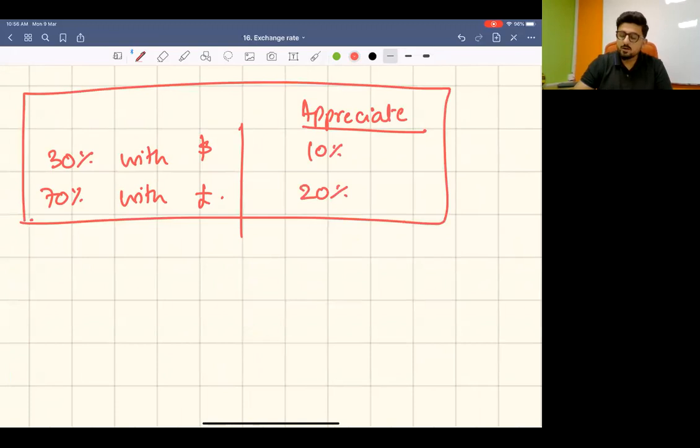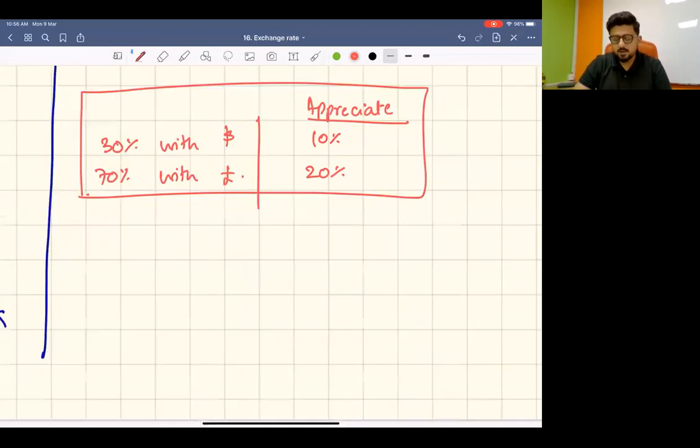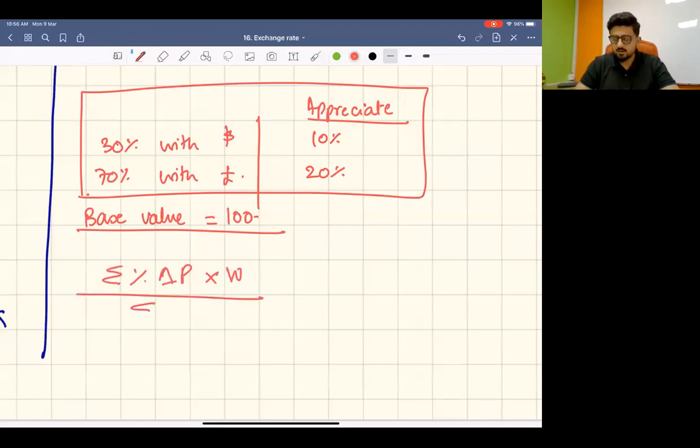is 100. Just like price change calculations or inflation, I'm going to calculate the change in exchange rate times weight, divided by the sum of weights. The change here is the exchange rate change. Basically we make a basket of the currencies the country trades with, a weighted basket. The more trade with a country, the more weight it gets.